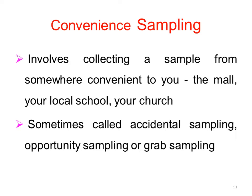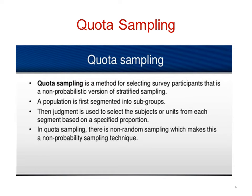The next one is quota sampling. This is the non-probabilistic version of stratified sampling. The population is divided into subgroups, and the researcher selects samples from each subgroup in a specific proportion.